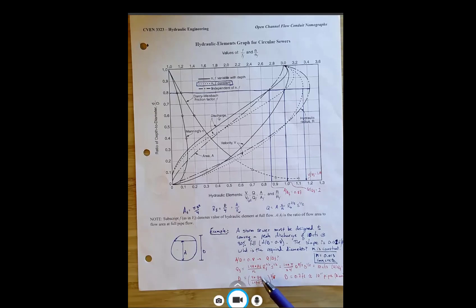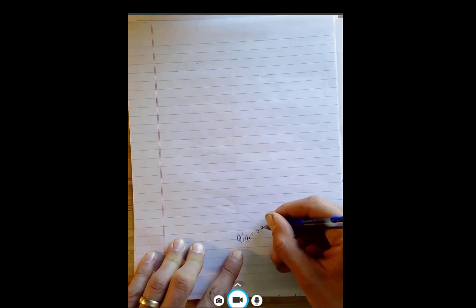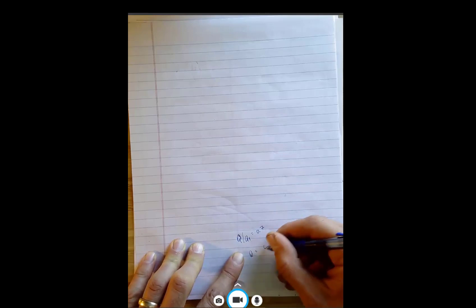So if Q over QF wasn't equal to 1, in this case, we could simply say, okay, well, Q over QF is equal to 0.7 or something like that. Then we could just say Q is equal to 0.7 QF. And then that's what we would plug into here.